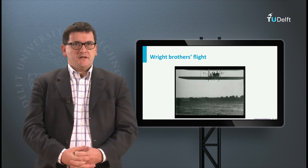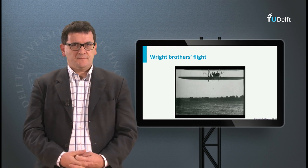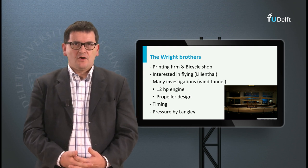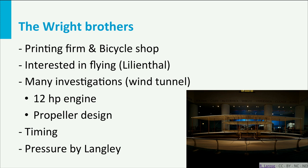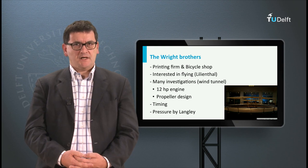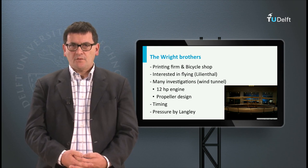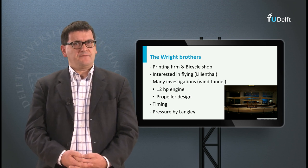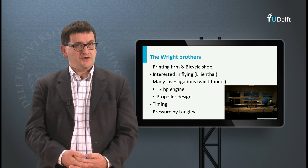The question may arise: why were the Wright brothers first? Well, they had a number of advantages over other pioneers. They had manufacturing capabilities in their printing firm and bicycle shop. They were also very interested in flying and they followed other pioneers in their attempts, like Otto Lilienthal. They also performed quite a lot of tests themselves on their engine, wing profiles, and propeller. Next to that, there was pressure to speed up the process and the time for flying had come. If the Wright brothers had failed, probably another pioneer would have had the honor of a first flight shortly afterwards.